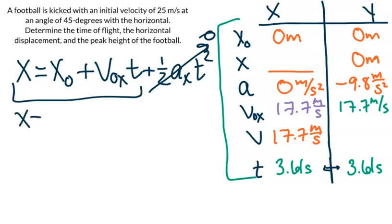From here we can plug in all of our information. We also know that our initial position is zero. So we're going to take 17.7 meters per second and multiply that by the time that we found in the previous slide.